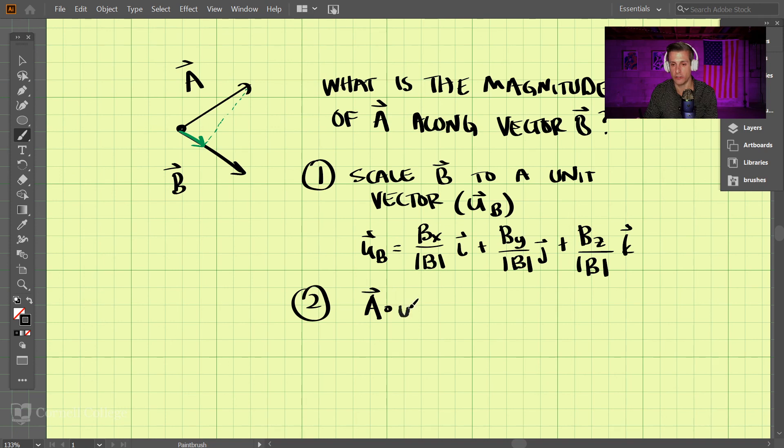That's the first step. The second step is we take the dot product of A dot uB. That would be the answer to 'what is the magnitude of A along vector B?' We have all the components of A and all the components of the unit vector along B, and we just take the dot product of those two. That is the dot product.